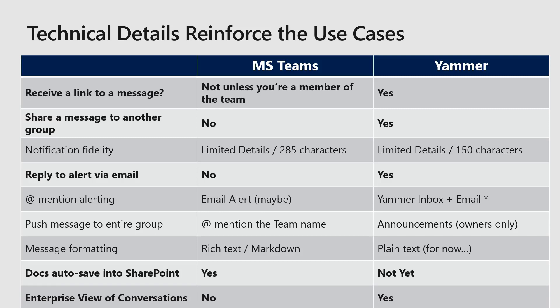Message formatting: if rich text, markdown, or code snippets are really important, Teams is definitely the winner right now. Next year sometime we'll get rich text in Yammer, but for now it's just plain text.